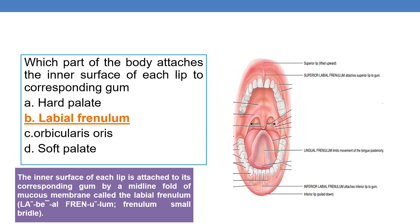Coming to the first question: which part of the body attaches the inner surface of each lip to the corresponding gum? We have two lips — superior and inferior. Each lip is attached to the gum with the help of the labial frenulum. Labial means related to lips. The inner surface of each lip is attached to its corresponding gum by a midline fold of mucous membrane. This is the inferior labial frenulum that attaches the inferior lip to the gum, and this one is the superior labial frenulum that attaches the superior lip to the gum.